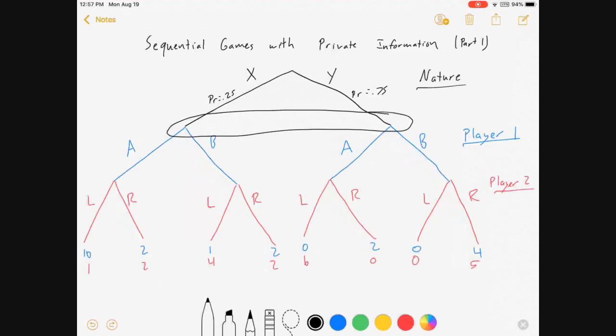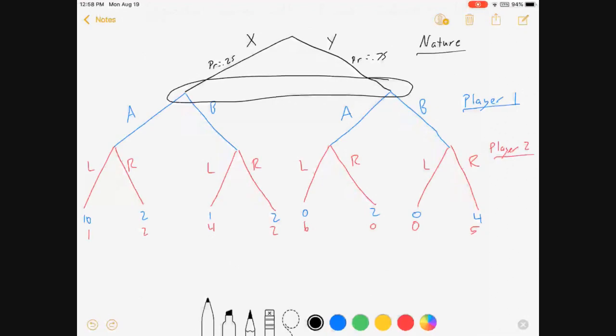So what we're gonna be looking for now is something called a Bayesian Nash equilibrium or a BNE. The BNE is one where we basically have to deal with these probabilities. So let's get started.